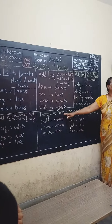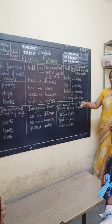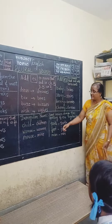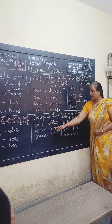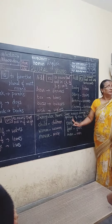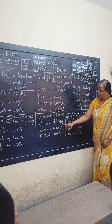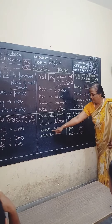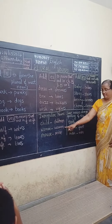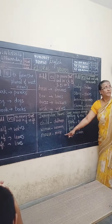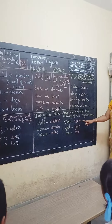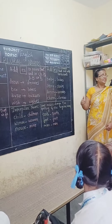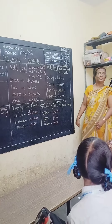Now, some nouns have irregular plurals that don't follow a standard rule. For example, 'child' becomes 'children', 'man' becomes 'men', 'mouse' becomes 'mice', 'tooth' becomes 'teeth', 'foot' becomes 'feet', 'man' becomes 'men'. Did you understand? Okay.